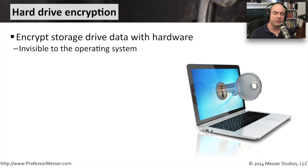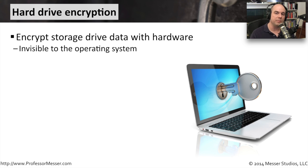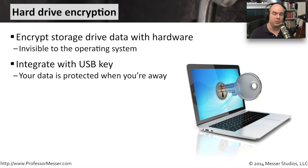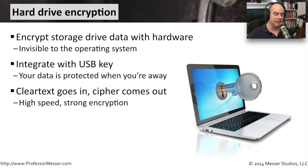Full disk encryption can be software-based, but there is also hardware-based hard drive encryption that is completely invisible to the operating system. It's a hardware device where you plug a drive in and it sits in the middle between your motherboard and the drive itself, encrypting everything flowing through it. It can also integrate with a USB key, so you step up to your computer, plug in your USB key, and only if the correct key is present do you gain access to the data on the encrypted hard drive. It is very high speed — you don't even know it's there — and the encryption is very strong, so if somebody got hold of your hard drives, they would still have no access to the data.